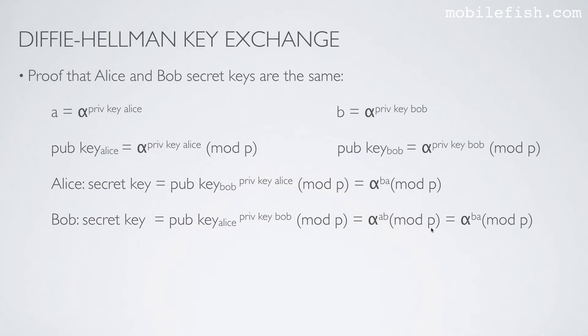And if you look at this equation, alpha^(AB) is the same as alpha^(BA). If you look at both equations, then they are the same. So this is the proof that Alice and Bob's secret keys are the same.